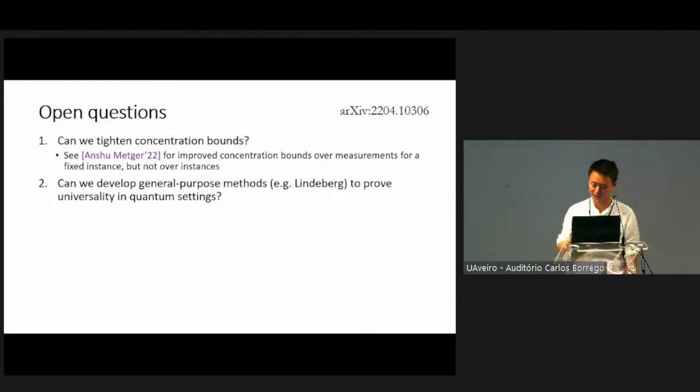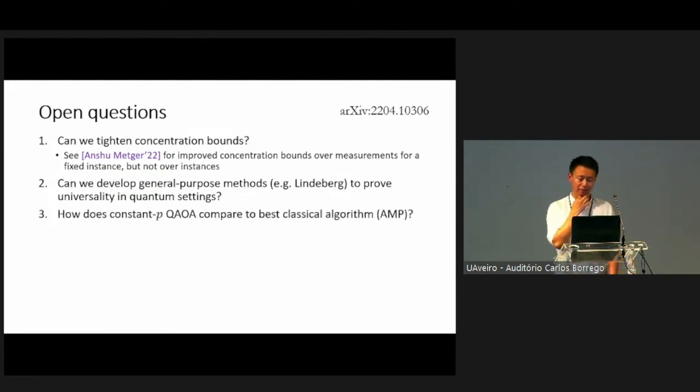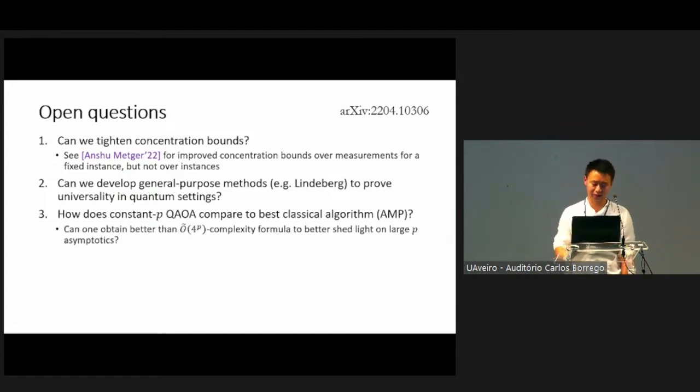Can we also develop more general purpose methods such as the Lindeberg method in classical statistics to prove universality in quantum settings? I think, personally, that's a very interesting technical question. Also, it's still very interesting, even though we have shown that the constant level QAOA is not able to find the optimum for these spin glass problems. But how does it compare to the best classical algorithm? That is still kind of open. Because currently, all we know is that both algorithms don't get to the optimum. In particular, can we get a better understanding of the large p asymptotics beyond our current formula, which requires exponential in p complexity to evaluate?